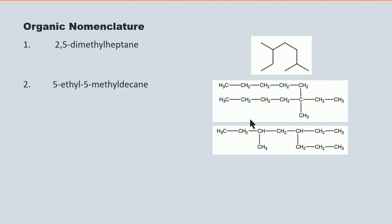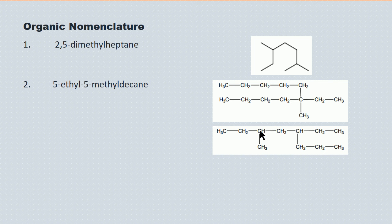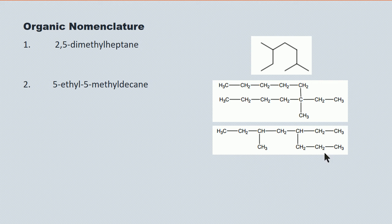Here's another elaborate one — let's see if we can find the longest chain. One, two, three, four, five, six, seven, eight — so this is an octane molecule. Counting from the left, this methyl is attached at the third carbon. Counting from the right, this ethyl is attached at the fourth carbon — so we properly count from the left, and it becomes 5-ethyl-3-methyloctane. And again, ethyl before methyl — E before M in the alphabet.